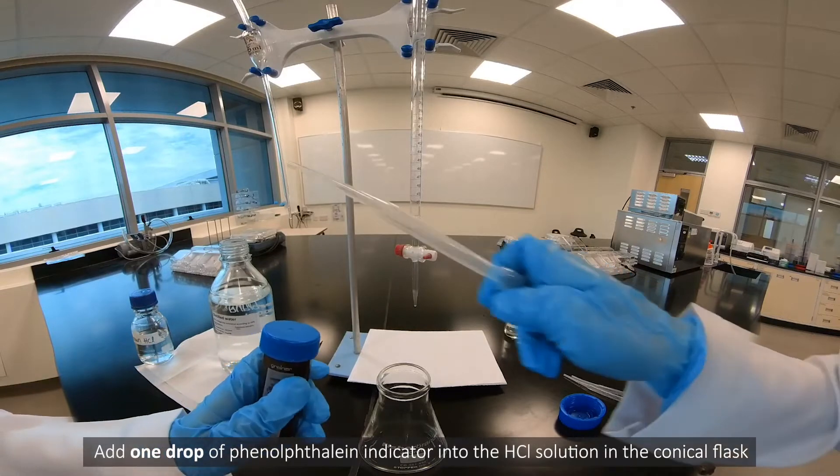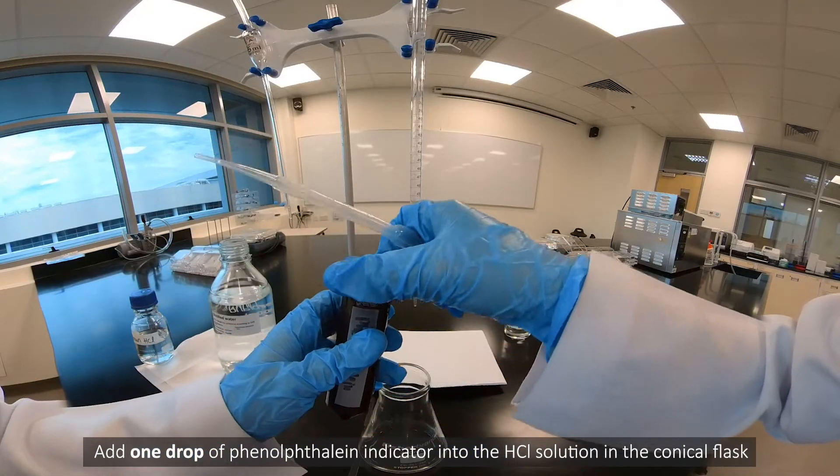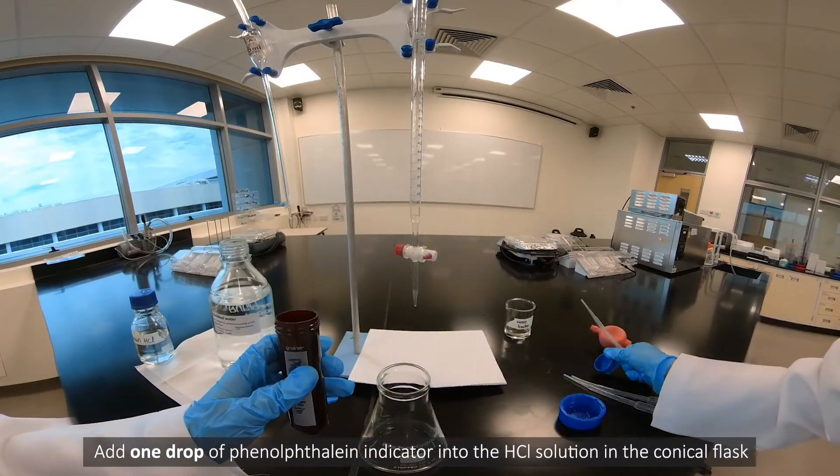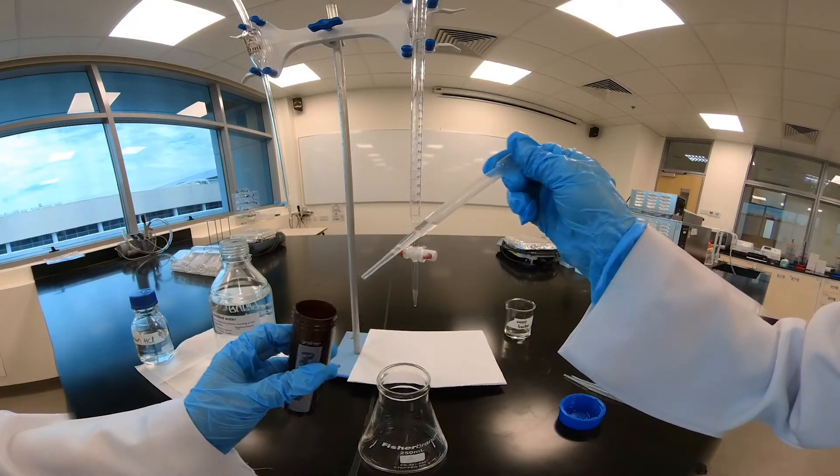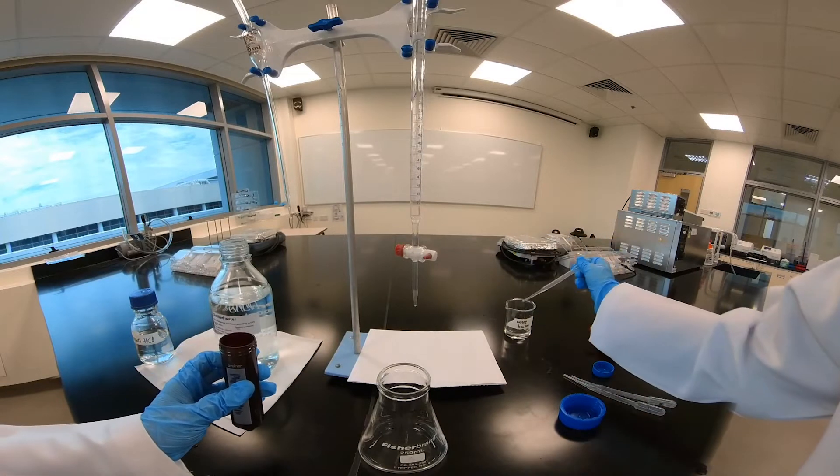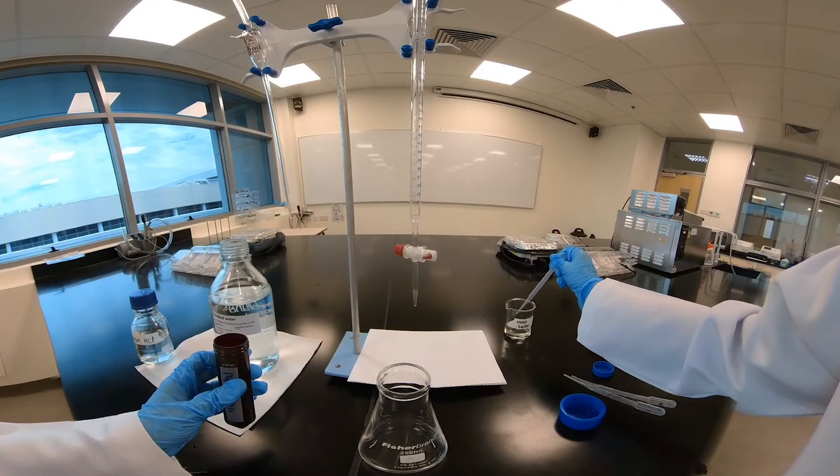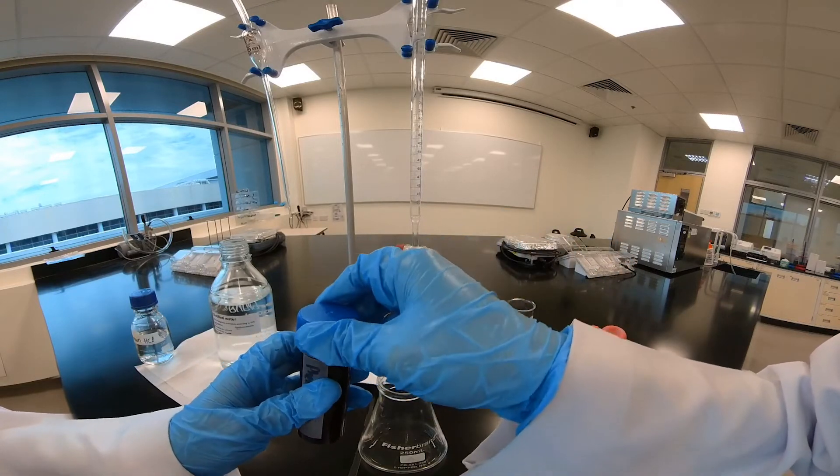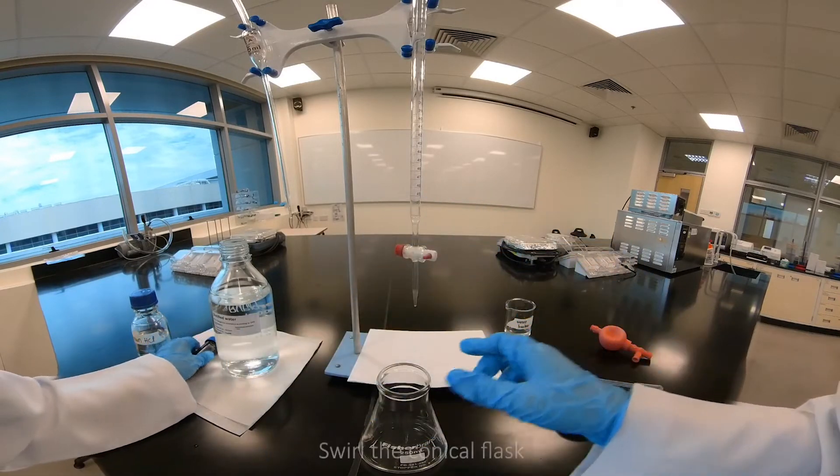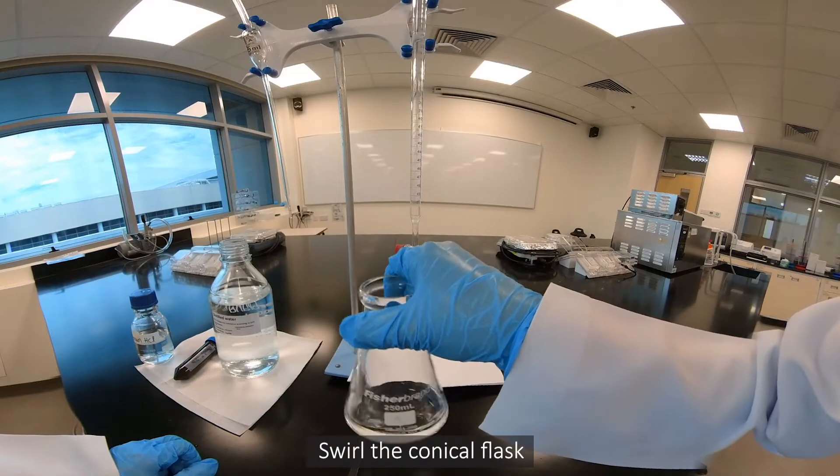Add one drop of phenolphthalein indicator into the HCL solution in the conical flask. Swirl the conical flask.